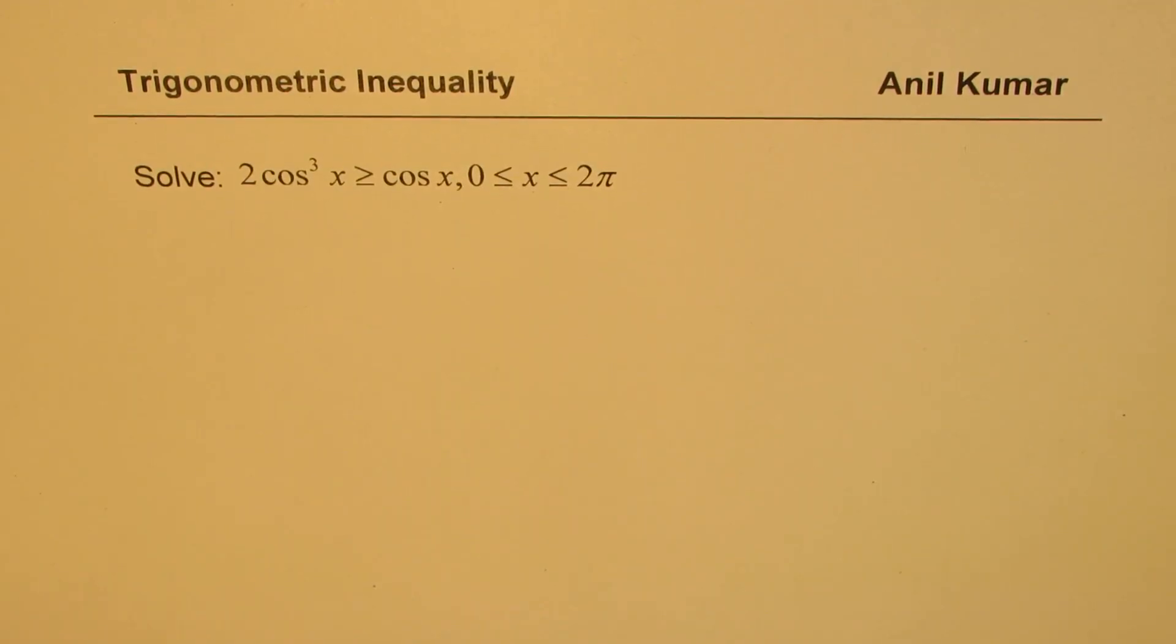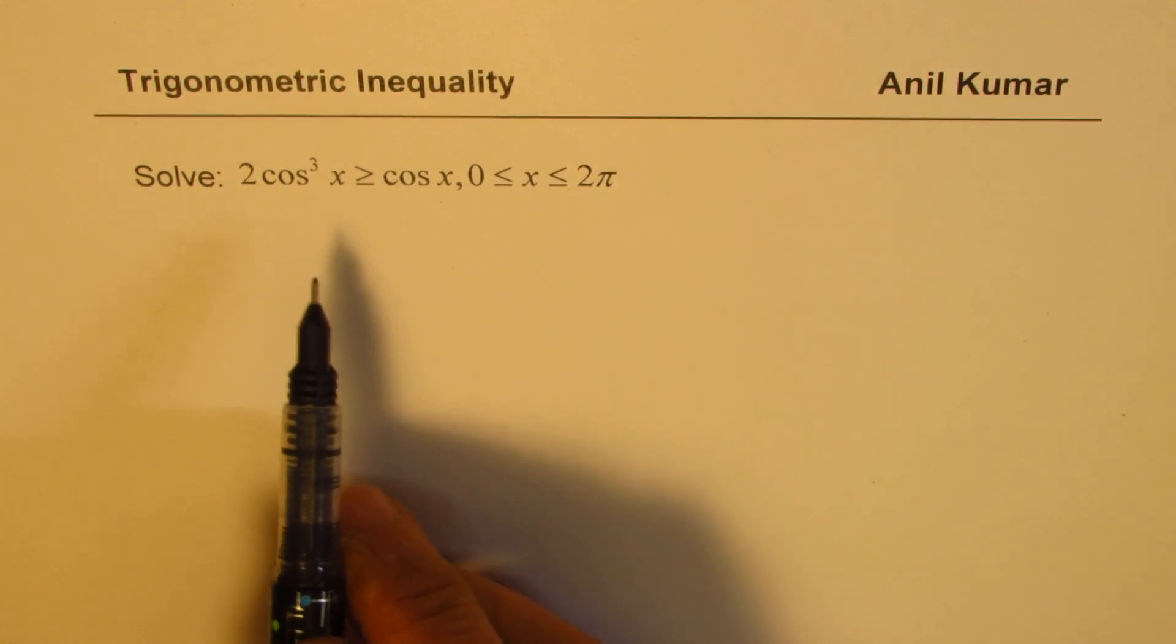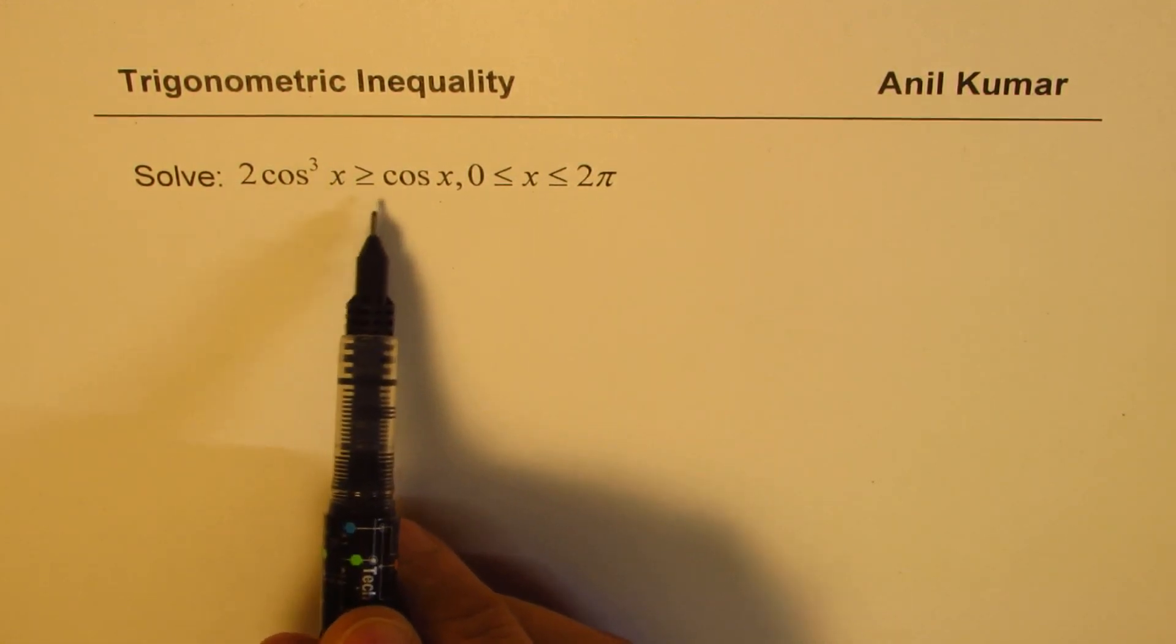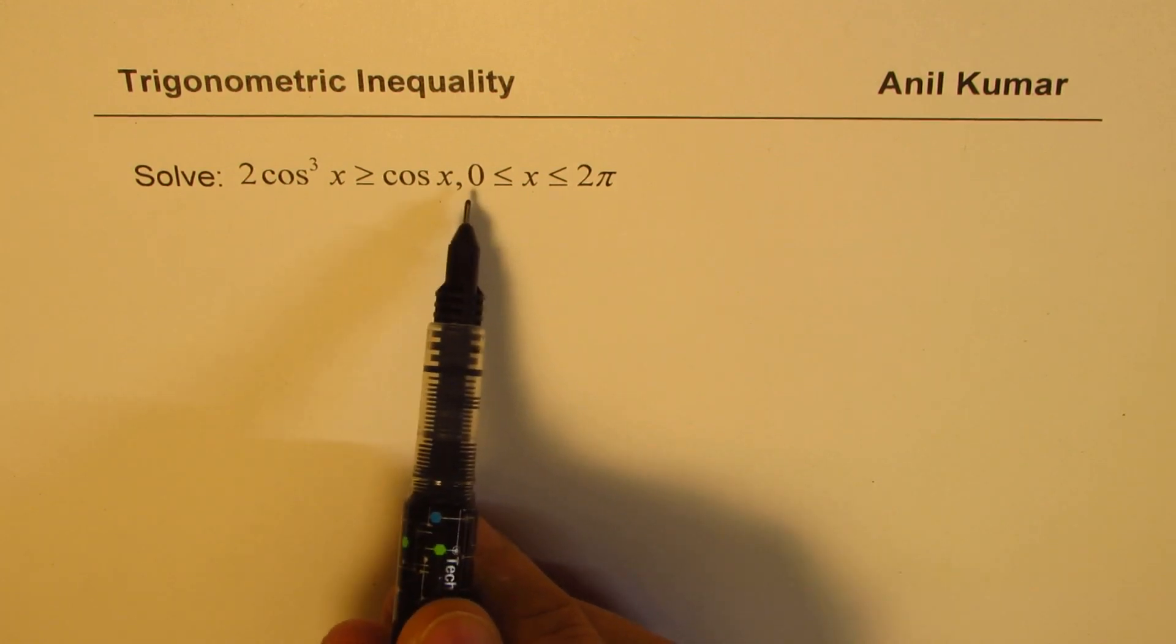I'm Anil Kumar, sharing with you an excellent question based on trigonometric inequalities. We need to solve 2 cos³x ≥ cos x where x is between 0 to 2π.